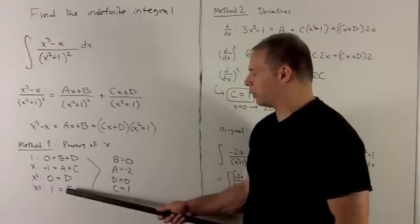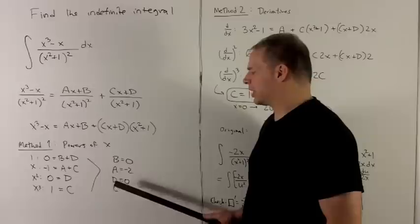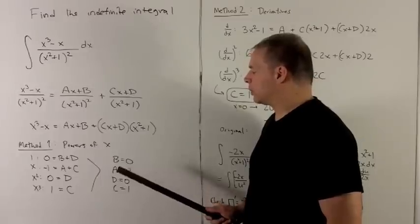We're going to have c equals 1 when we check out the cubes. Then d equals 0, a equals minus 2, b equals 0.